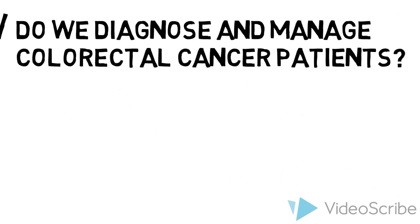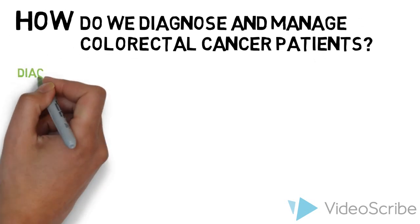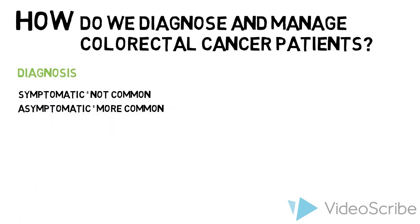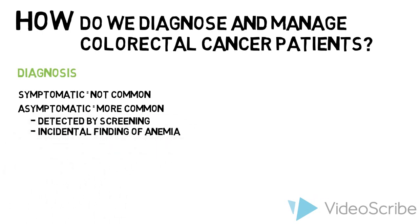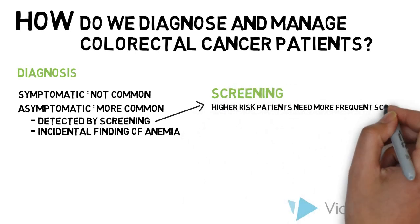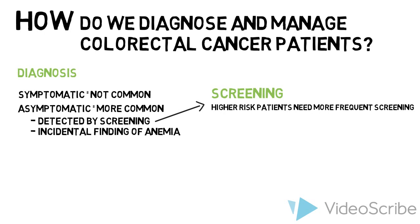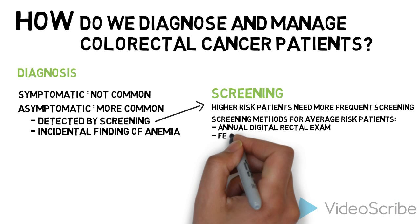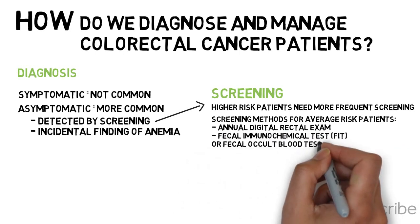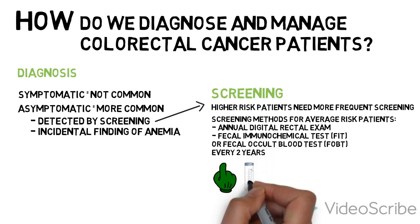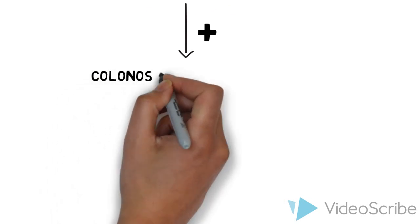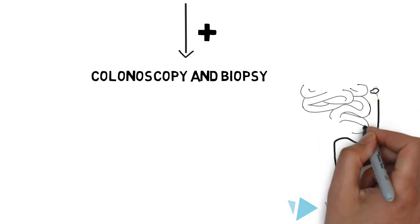How do we diagnose and manage colorectal cancer patients? Diagnosis: Sometimes patients present with symptoms and signs of colorectal cancer. More often, however, colorectal cancer is asymptomatic and is diagnosed by routine screening or by incidental findings of anemia on blood work. Patients with increased risk require more frequent screening. For average-risk patients, guidelines may include an annual digital rectal exam combined with fecal immunochemical tests (FIT) or fecal occult blood tests (FOBT) every two years. If this test is positive, a colonoscopy is done to view the lumen of the rectum and colon and to take biopsies of any suspicious lesions.